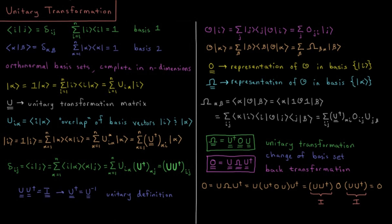This video will discuss unitary transformations for transforming matrices into different basis sets. Let's imagine we have two sets of orthonormal basis vectors which are complete in n dimensions.